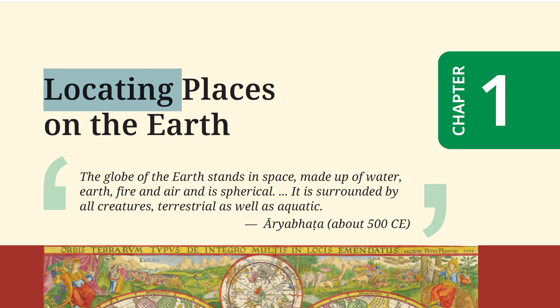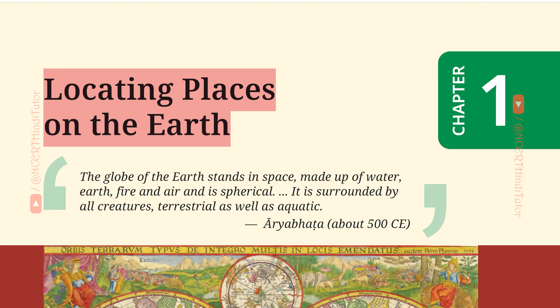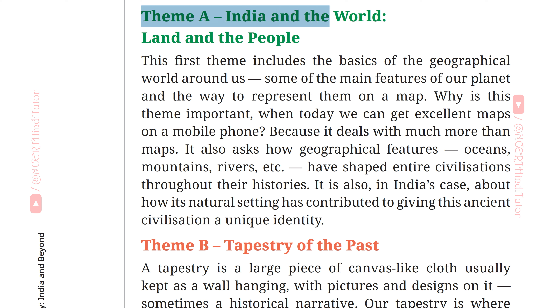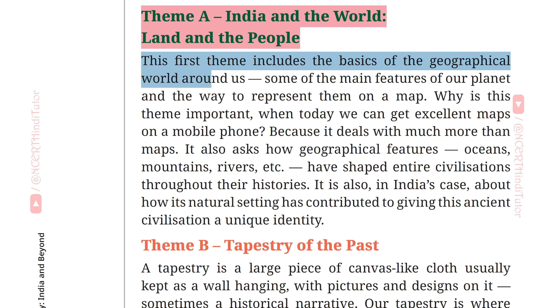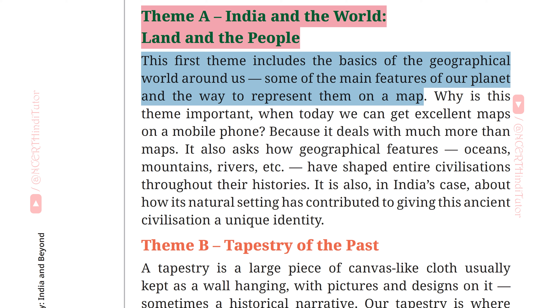Chapter 1: Locating Places on the Earth, from Class 6 Social Science book 'Exploring Society: India and Beyond', Theme A: India and the World, Land and the People. This first theme includes the basics of the geographical world around us, some of the main features of our planet and the way to represent them on a map.